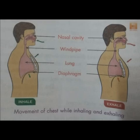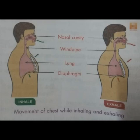Here four things you can see: first is nasal cavity, second is windpipe, third is lung, and the fourth one is diaphragm. The diaphragm is present below the lungs. It is a thin layer of muscle present just below the lungs, and it helps in the respiratory system.